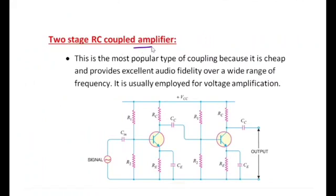We have discussed about the practical CE amplifier. Now we are going to discuss the two-stage RC coupled amplifier. This is called an RC coupled amplifier because we are using coupling devices — resistors and capacitors. This is the most popular type of amplifier coupling because it is cheap and provides excellent audio fidelity over a wide range of frequencies. It is usually employed for voltage amplification.